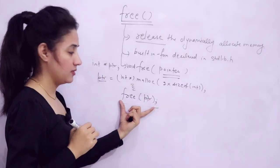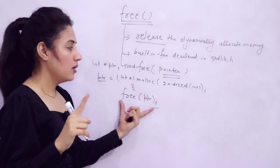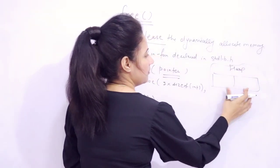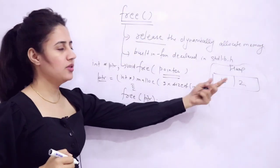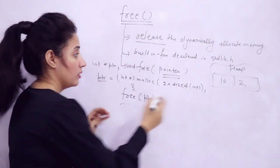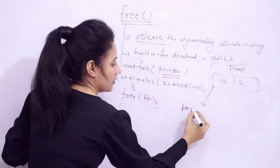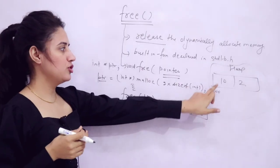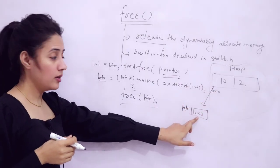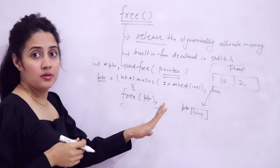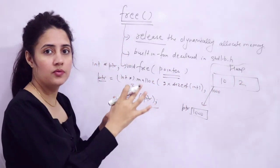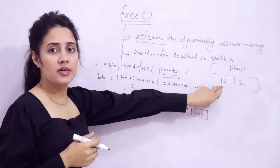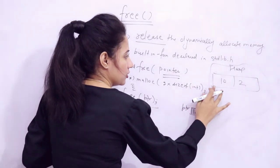Now, what does this exactly mean? Say we have data in the heap section — two integers, 10 and 2, stored there. The base address, say 1000, is stored in ptr. Once you call free(ptr), you have freed this memory — you have released this dynamically allocated memory back to the heap section.